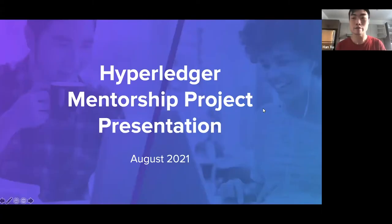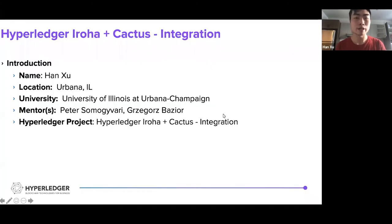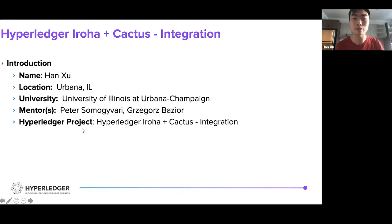Hi everyone. Today I'm going to do the final presentation for my internship over this summer. My name is Han and I'm from UIUC. For the past summer I worked on this Hyperledger project, which is the Hyperledger Iroha and Cactus integration, and my mentors are Peter and Greg.